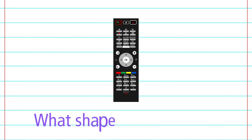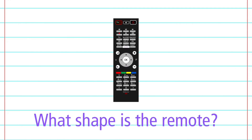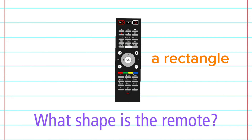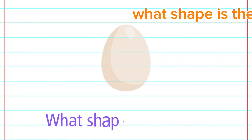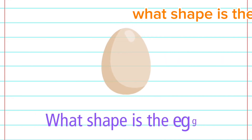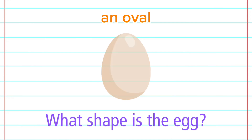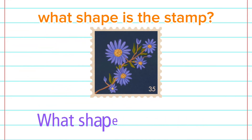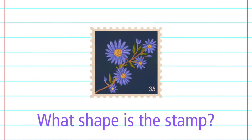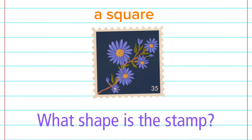What shape is a remote? A rectangle. What shape is the egg? An oval. What shape is a stamp? A square.